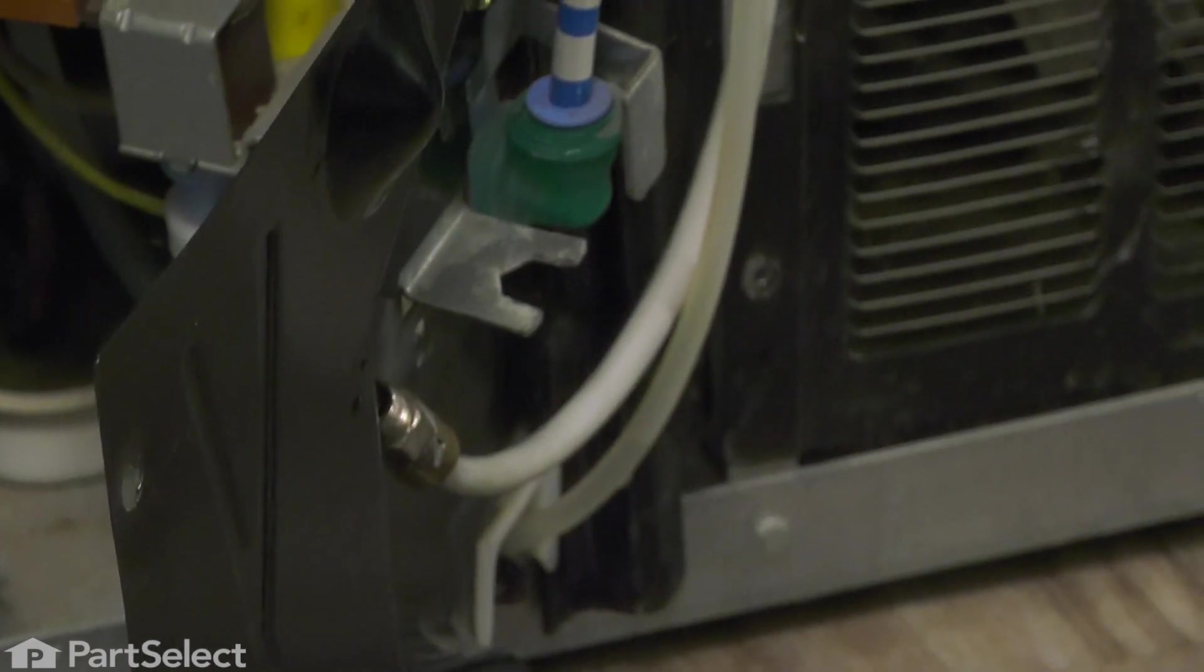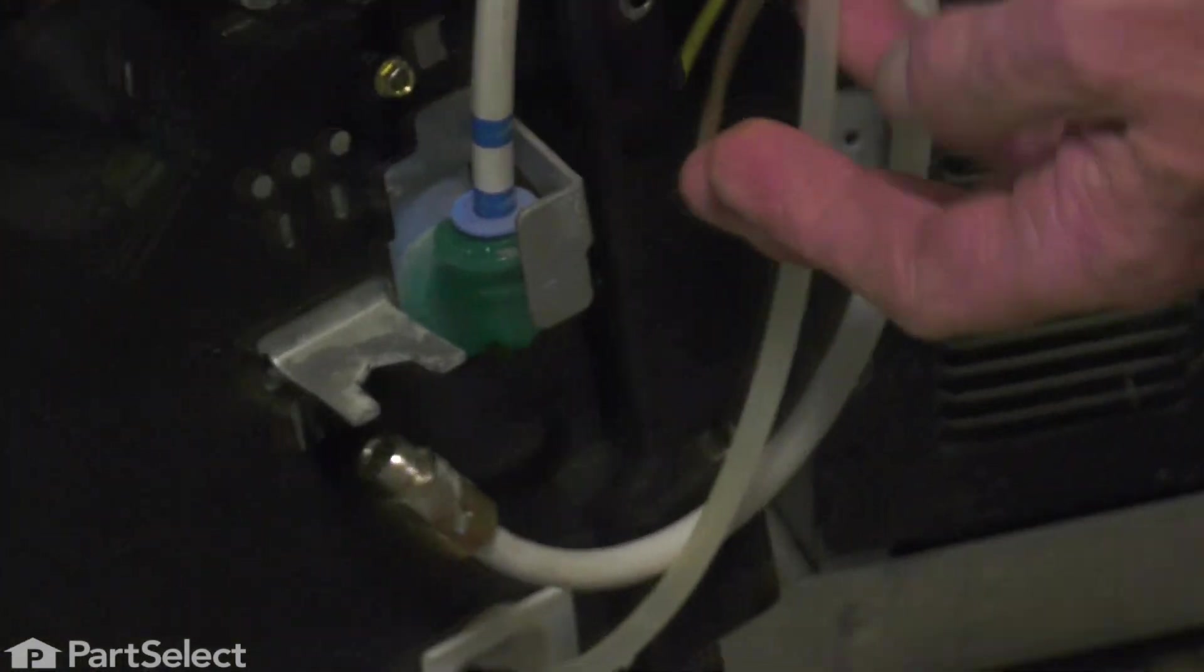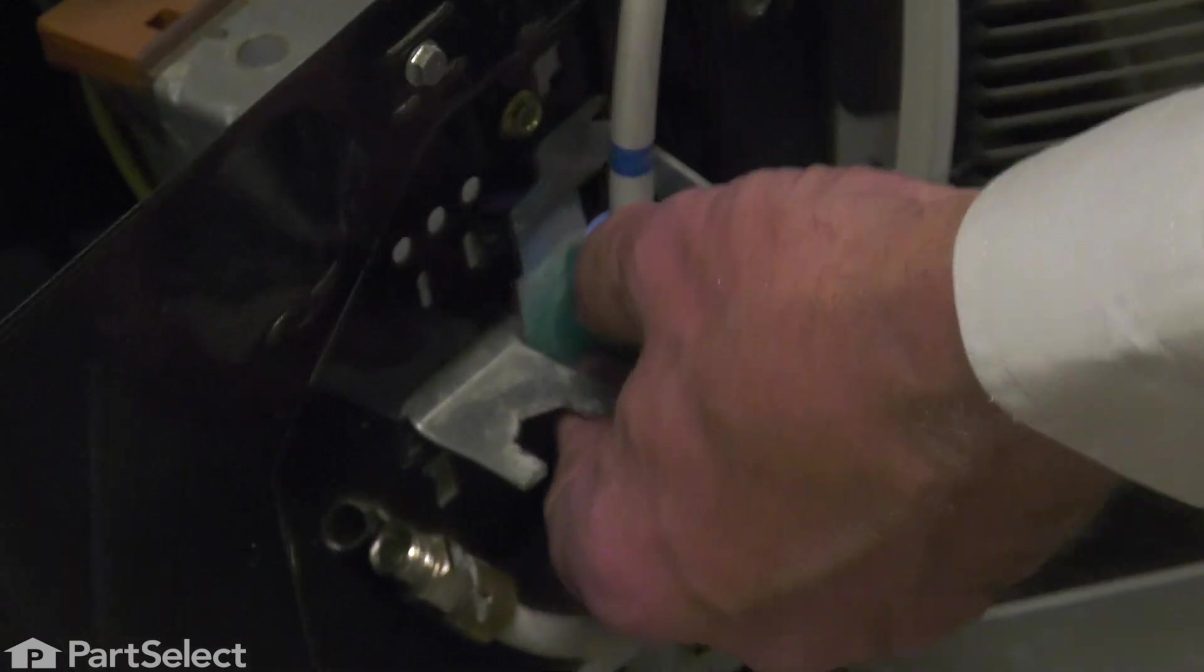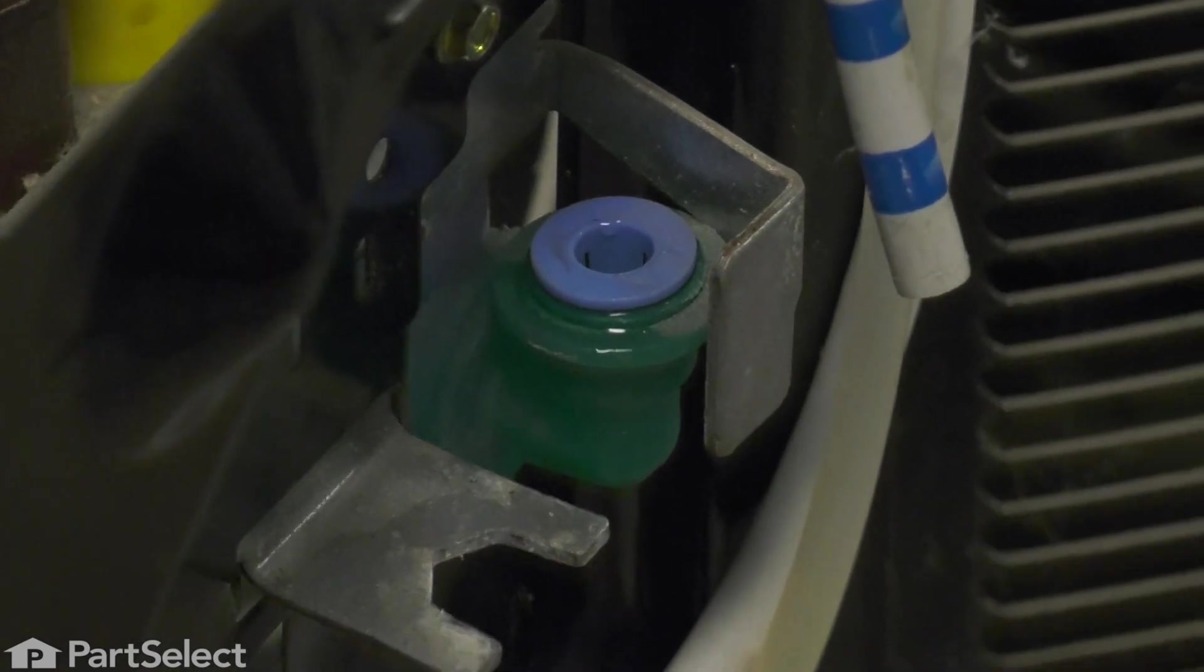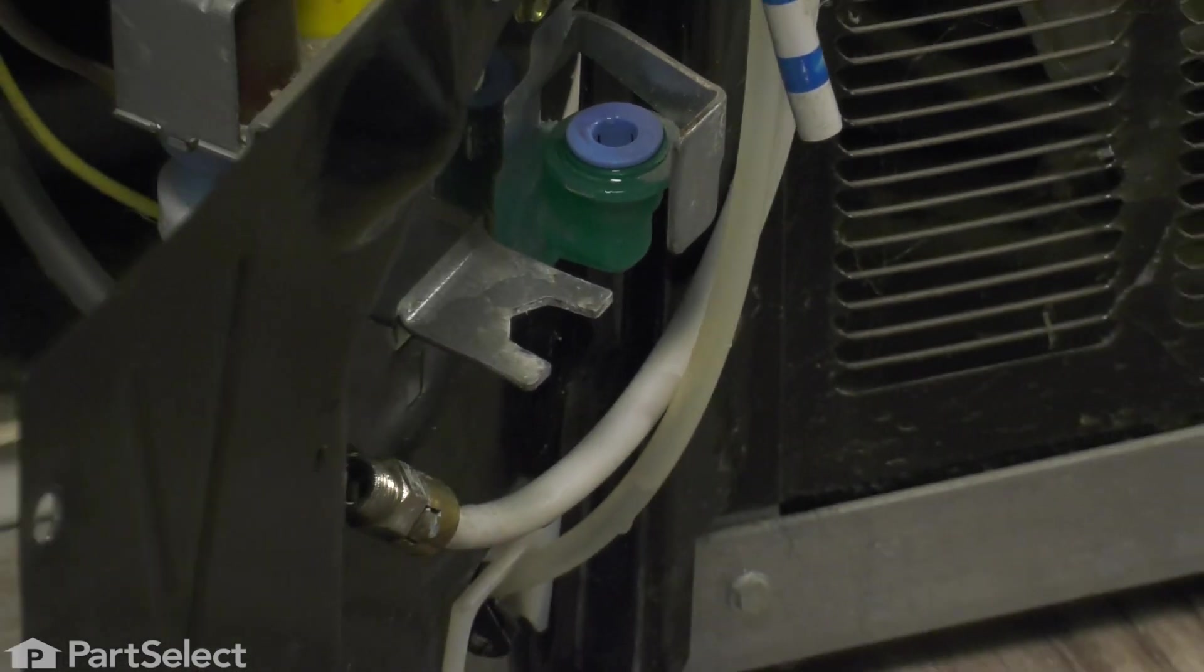We'll also need to disconnect the return line. Simply press down on that collet and pull the tubing out. Next, we're going to pull that tubing out of this channel.